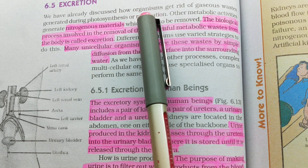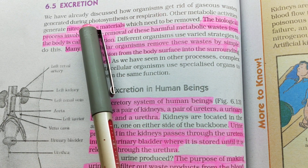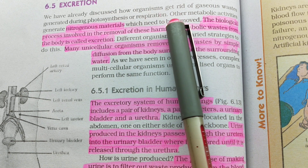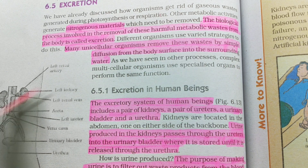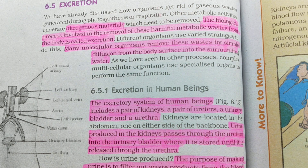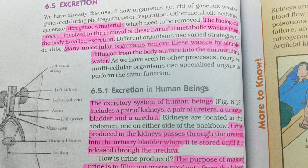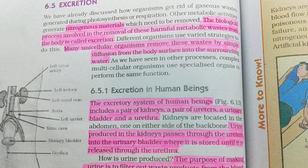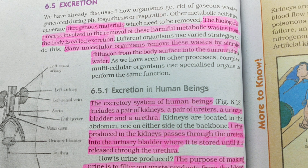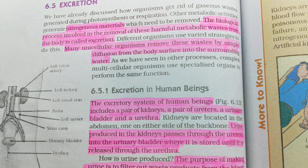We have already discussed how organisms get rid of gaseous waste generated during photosynthesis or respiration. Other metabolic activities generate nitrogenous waste which also needs to be removed. If we talk about excretion, we have the gaseous waste — for example, carbon dioxide. In fact, the main excretion product of our body is carbon dioxide — even when we are sleeping, we are releasing it.